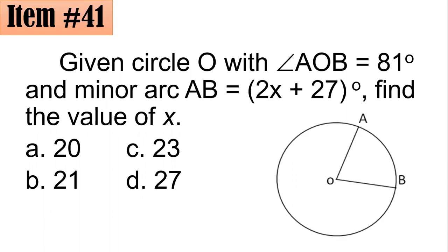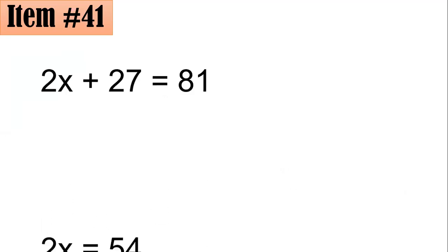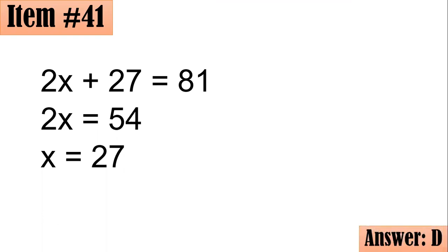From here, we could actually see that I hope we could still recall that the measure of the central angle in degrees is equal to the measure of the intercepted arc in degrees. Hence, we have to equate 2x plus 27 with 81. Subtracting 27 from both sides, we have 2x equals 54. Dividing both sides by 2, which means x is 27, letter D.